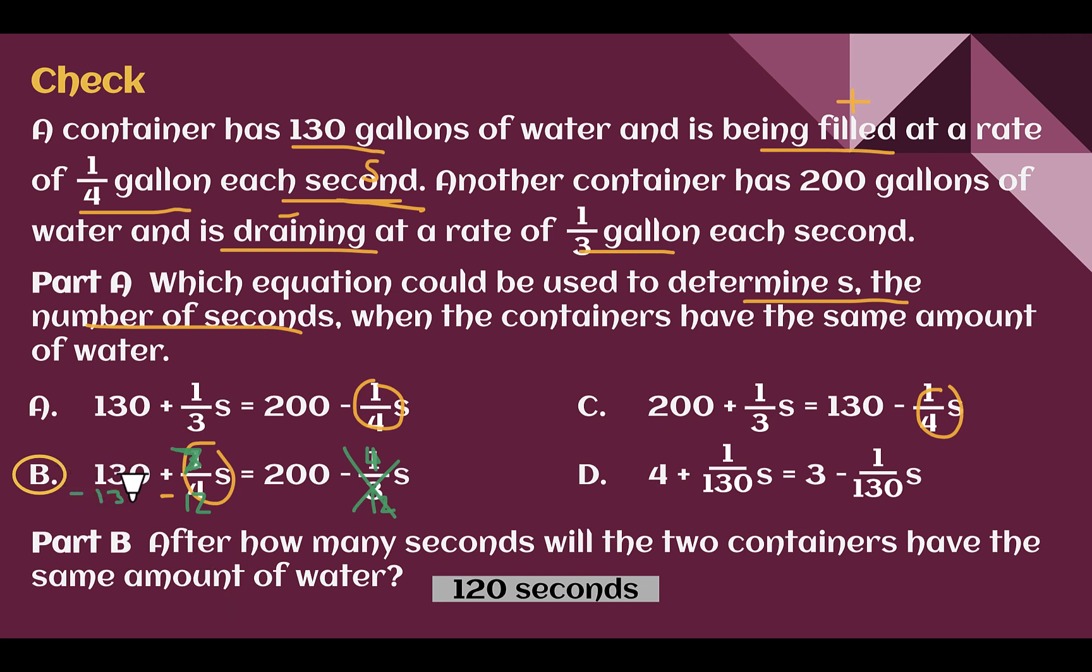I would subtract 130 from both sides. It's gone there. 200 minus 130 is 70. So I have seven twelfths times the number of seconds is equal to 70.